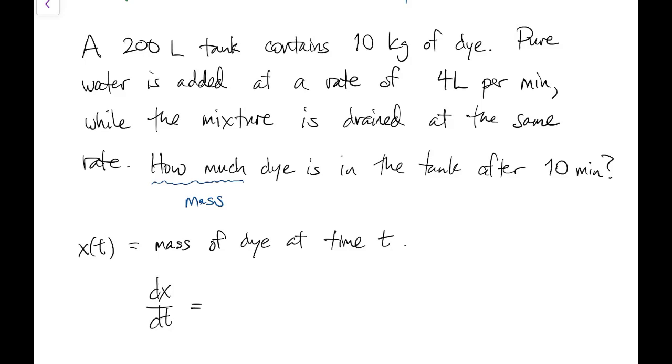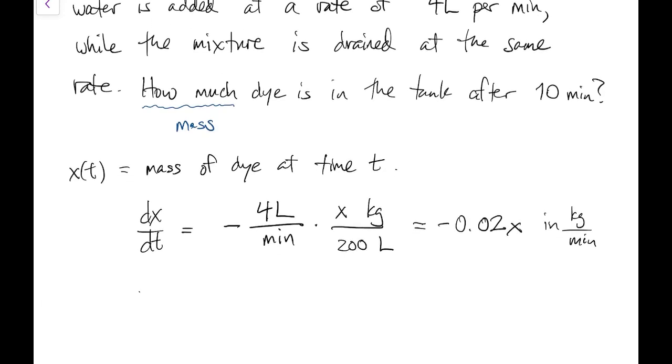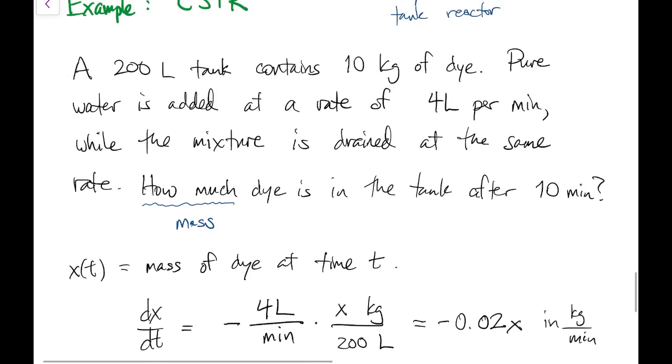So the rate of change in the dye mass, all that's happening is that stuff is flowing out. So you take the rate at which the mixture is flowing out times the concentration in that mixture, which depends on what x itself is at every given moment. And what you realize is it all just comes out to be a constant times x. And so this is, again, an exponential decay equation, which we can solve for x.